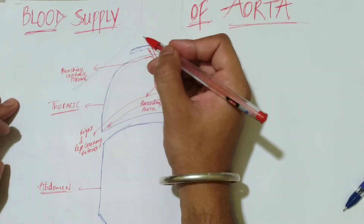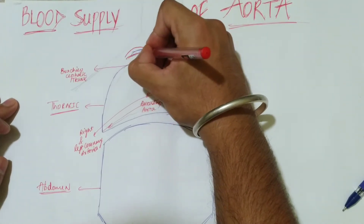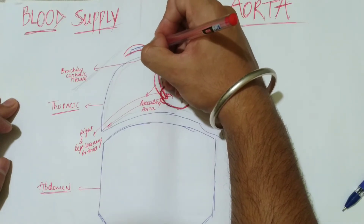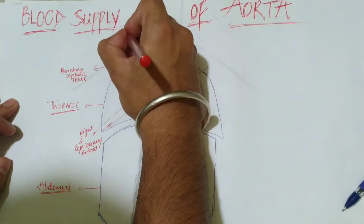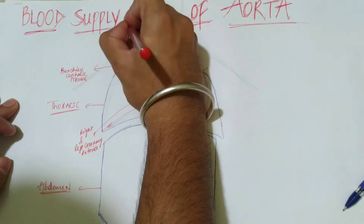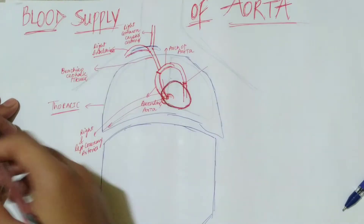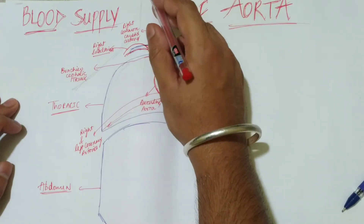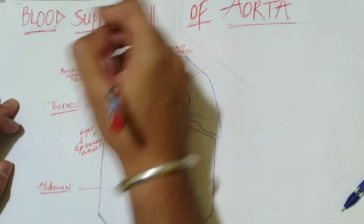At the level of the right sternoclavicular joint, it divides into two branches. One branch goes to the right arm — the right subclavian artery — which travels beneath the clavicle bone and into the arm through the axillary region. The other branch is the right common carotid artery. The right common carotid artery bifurcates further at the level of C4 cervical vertebra and at the level of the thyroid cartilage of the larynx.